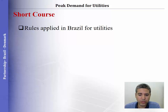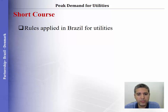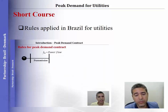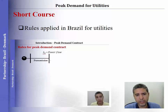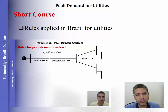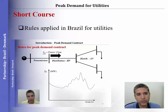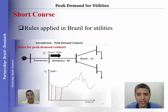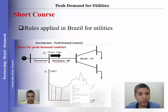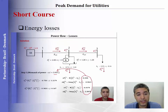Let's start with the short course related to peak demand for utilities. This short course is divided into four parts. In the first part, I explain the rules applied in Brazil for utilities. The idea of peak demand for utilities is to decide which is the best contract between the distribution and the transmission system, so we need to understand the rules applied to define this contract.